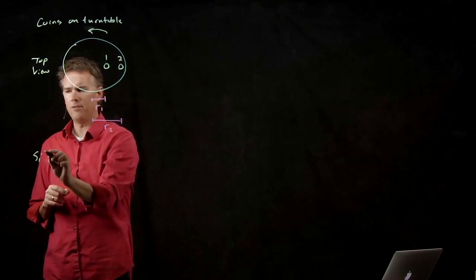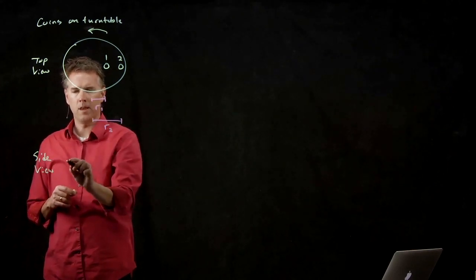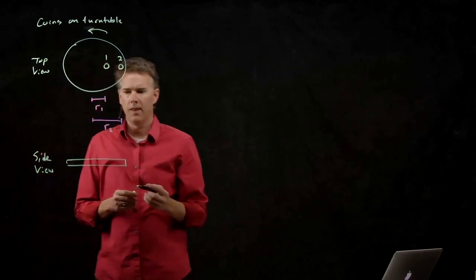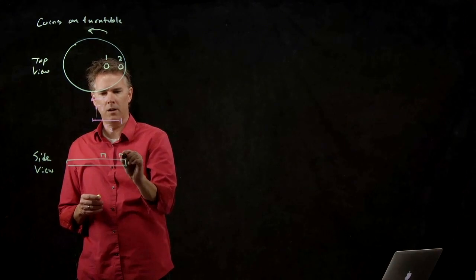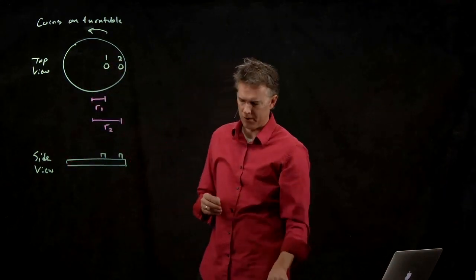So the side view would look like this. We would have that turntable becomes a disk, and then we have particle number one and particle number two sitting on top of the turntable.